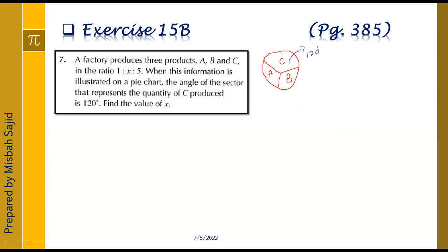Let's start. The factory produces 3 products, so we write A : B : C = 1 : X : 5. Now, the angle of the sector formula is: angle of sector = (given value ÷ total value) × 360 degrees.